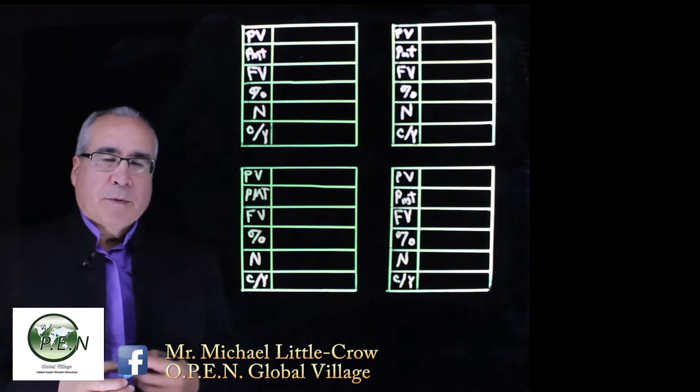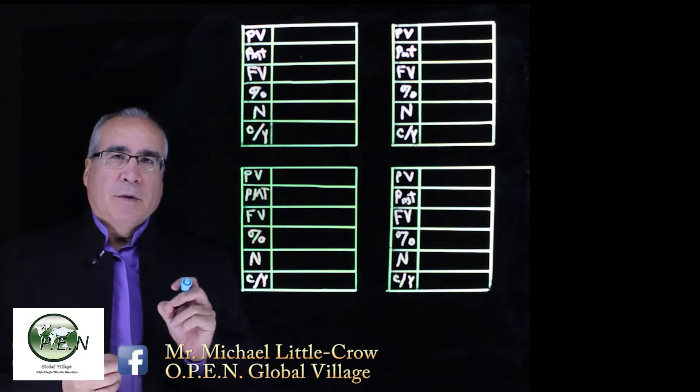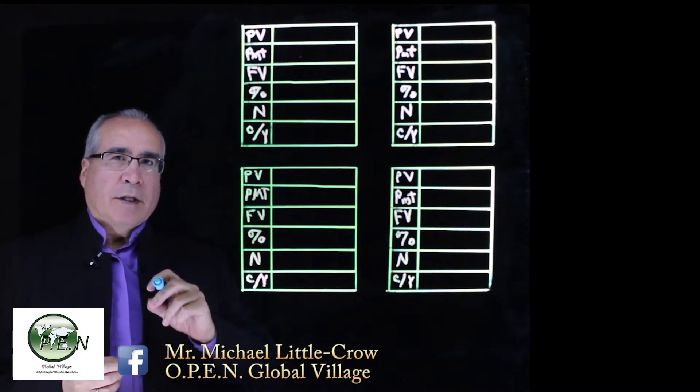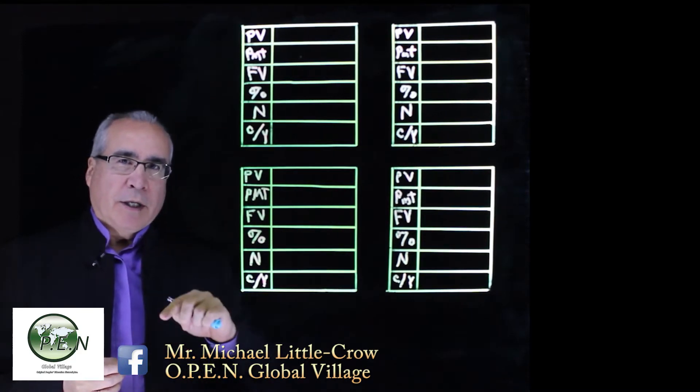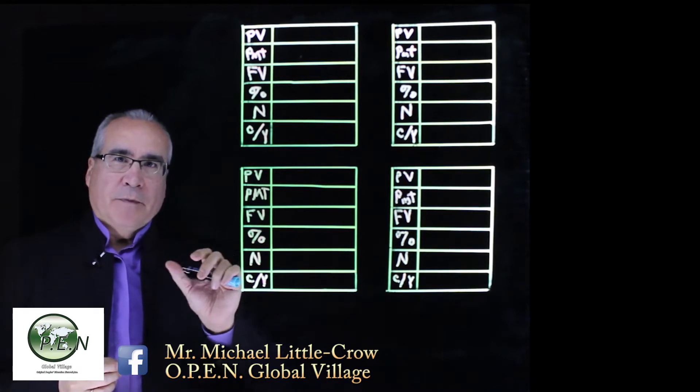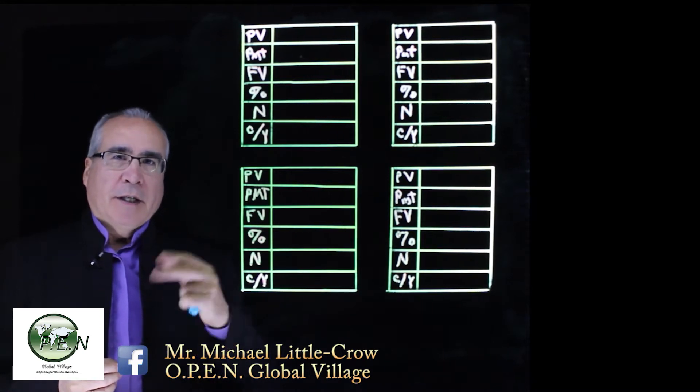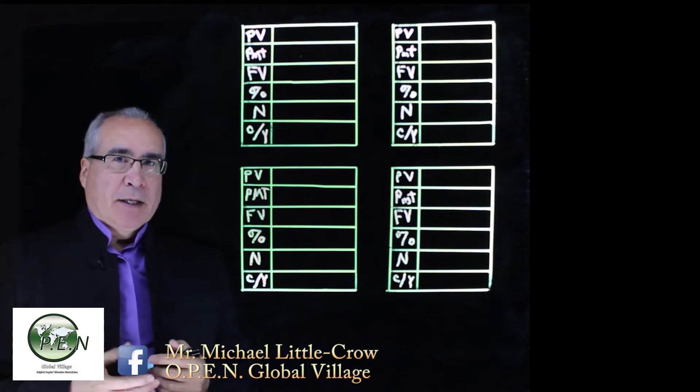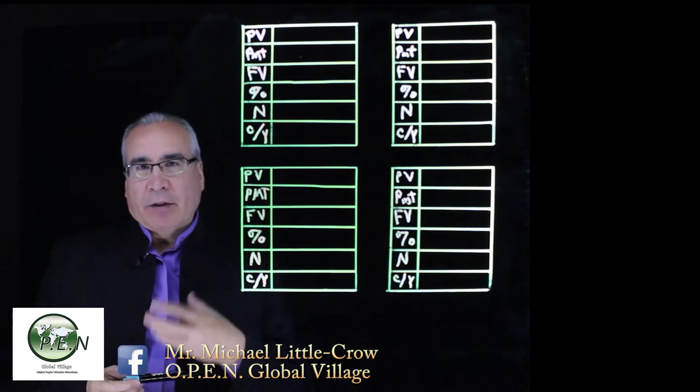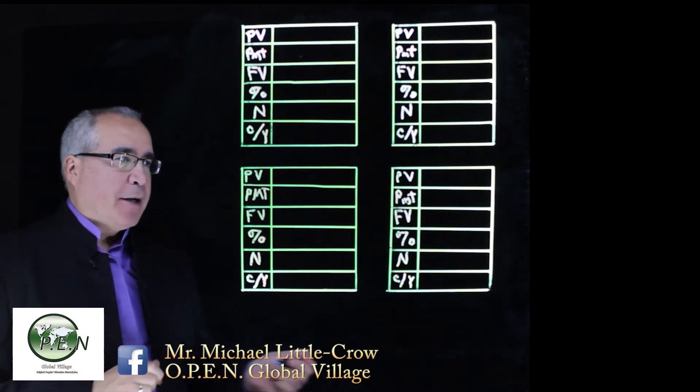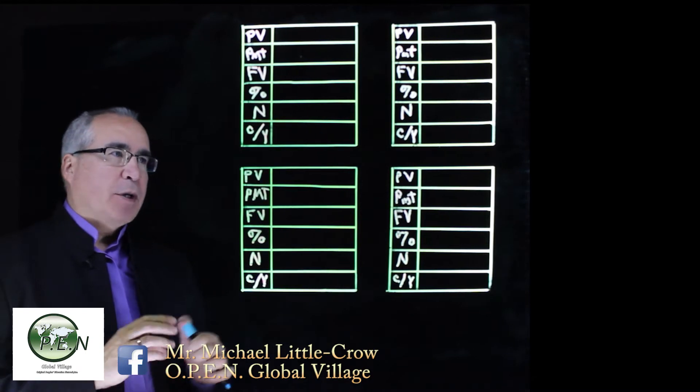In this chapter we're going to deal with the concept of an annuity. An annuity is an investment that has a regular fixed payment amount and then you save over time. So we're introducing basically a regular payment amount. Let's take a look at question number one.